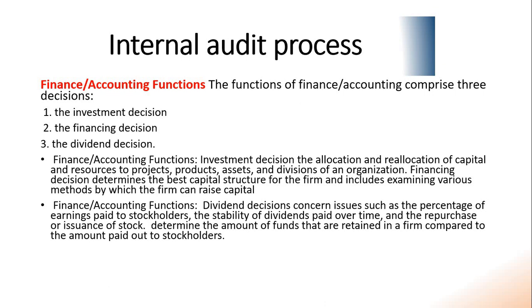The next in the internal audit process is the finance and accounting functions. The financial department is engaged in the financial activities of the firm. The functions of finance and accounting comprise three decisions: the investment decisions, the financing decisions, and the dividend decisions. It should be studied and evaluated how the organization is investing, what decisions are being made about financing, and what about the dividend decisions.